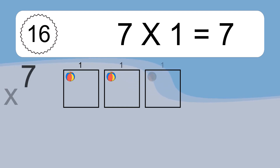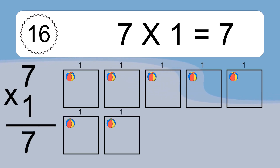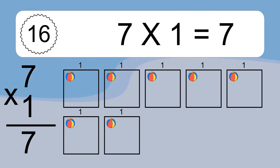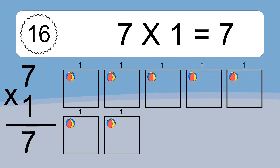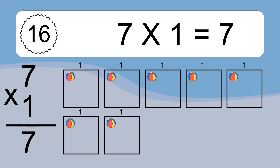7 times 1 equals what? 7 times 1 equals 7. We have 7 boxes, and each box has 1 colorful ball inside. If you count all the balls in all the boxes together, you will have 7 times 1 balls. This equals 7 balls.